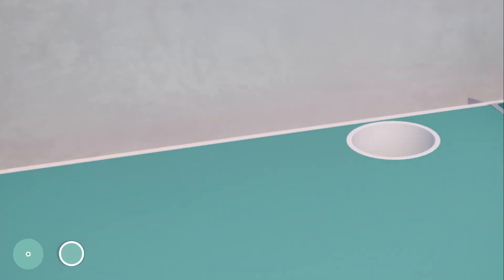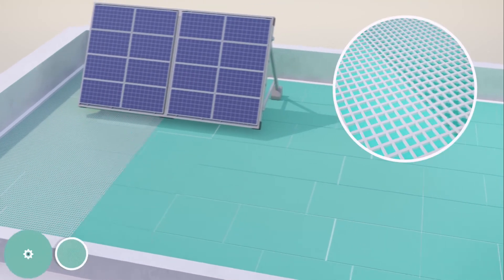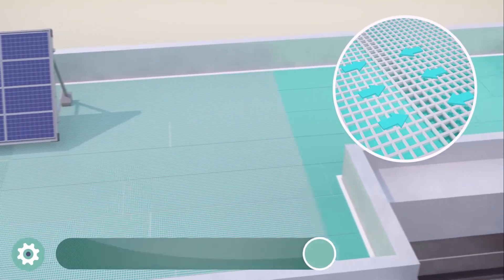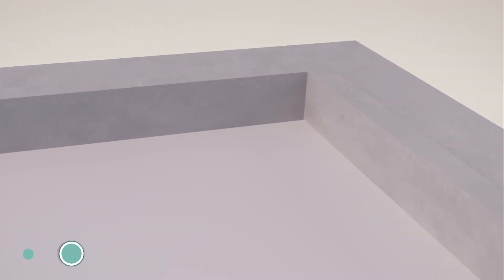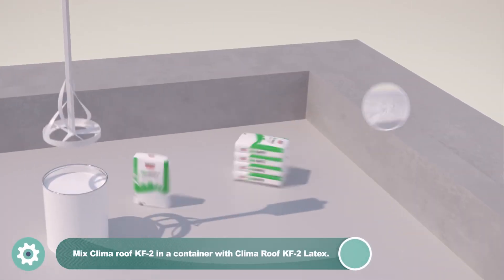The alkaline resistant Klima roof net glass fiber reinforcing mesh should be freely layered with a 10 cm overlap. We apply the second material of the system, Klima Roof KF2 mixed with latex mortar over the entire glass mesh.